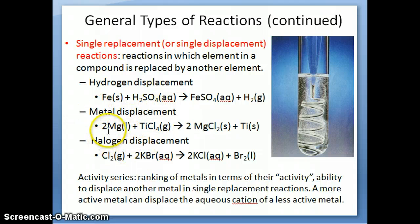A metal displacement is basically if you have two different metals. So one of the metals exists as an element. The other metal exists as an ionic compound. And you can see here, you have magnesium and titanium chloride. The titanium is being displaced by the magnesium to form magnesium chloride and titanium solid.